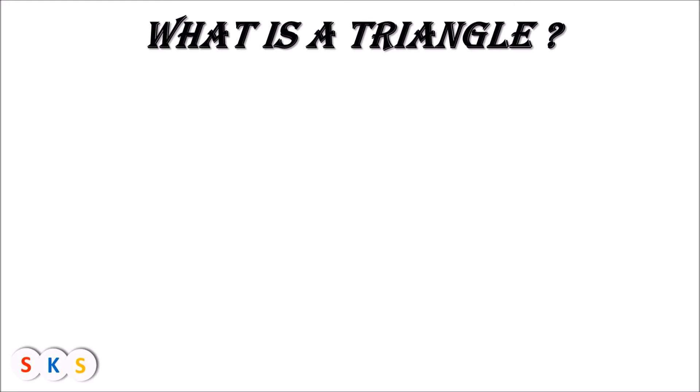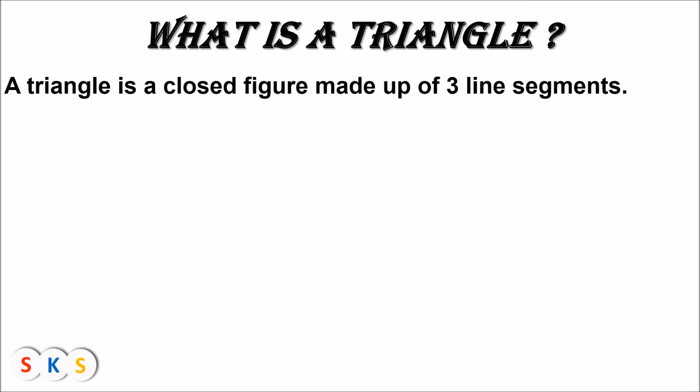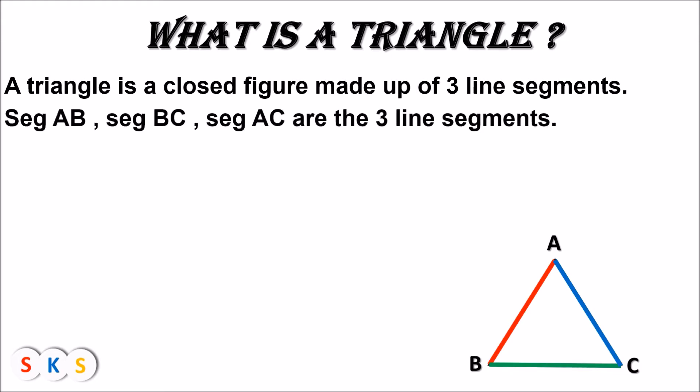What is a triangle? A triangle is a closed figure made up of three line segments. This figure is called a triangle. It has three segments: segment AB, segment BC, and segment AC. Since this figure is made up of three segments and is a closed figure, it is called a triangle. So, seg AB, seg BC, and seg AC are the three line segments.